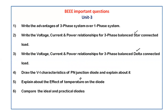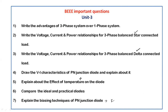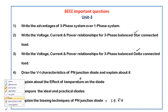Next, compare ideal and practical diodes — take the ideal diode equivalent circuit and explain the comparisons between ideal and practical diodes. Also explain the biasing techniques of the P-N junction diode: forward bias and reverse bias, explaining each clearly.